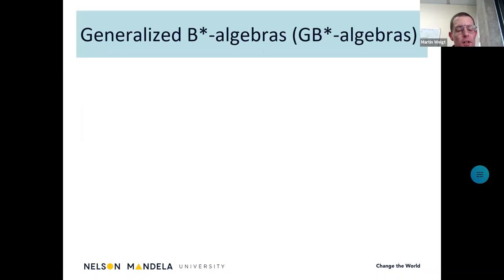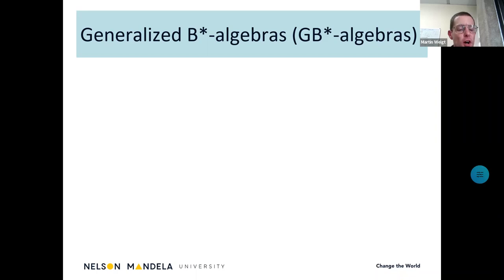Now comes the question: what type of locally convex star algebra can we take to house the observables? Locally convex star algebras are still rather general. There can be locally convex star algebras which have no representations and no positive linear functionals, and they can be very far removed from C-star algebras. So we need something which behaves more like a C-star algebra, with all the nice properties in which to do our quantum mechanics. One such avenue could be generalized B-star algebras.